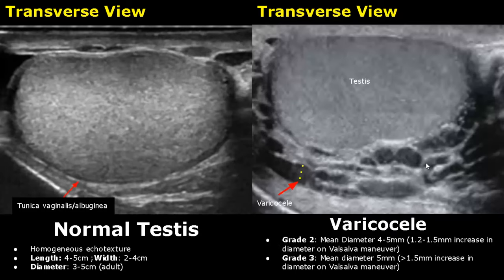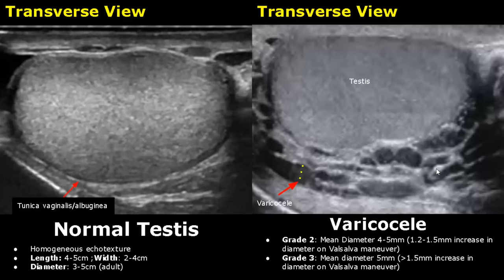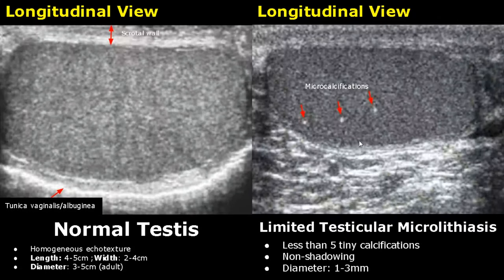In grade two varicocele the mean diameter is 4 to 5 millimeters; on Valsalva maneuver the diameter increases by 1.2 to 1.5 millimeters. In grade three varicocele the mean diameter is 5 millimeters or more, and on Valsalva maneuver the increase in diameter is greater than 1.5 millimeters.